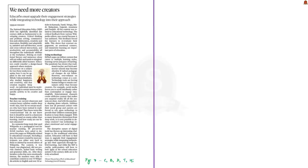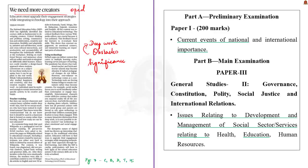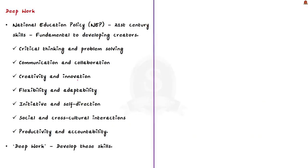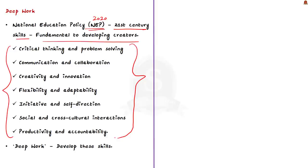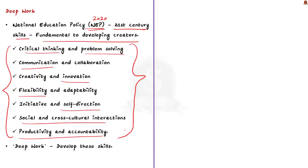For the next discussion we have an oped article on deep work. We will discuss what deep work is, the present obstacles to its promotion, and its significance. The National Education Policy of 2020 has rightfully identified 21st century skills as fundamental for developing creators. These skills include critical thinking, problem solving, communication, innovation, flexibility, self-direction, social and cultural interactions, and productivity and accountability. These skills are essential for the development of creators, and the next question is how we can develop them.